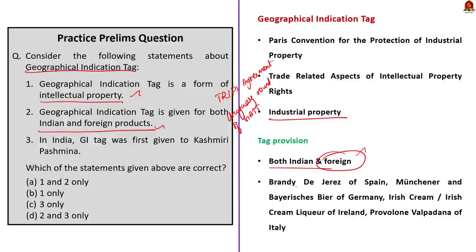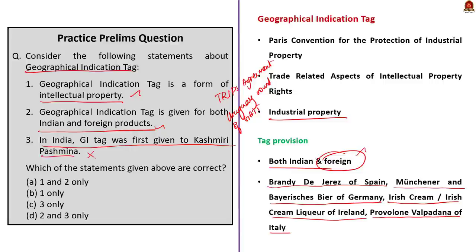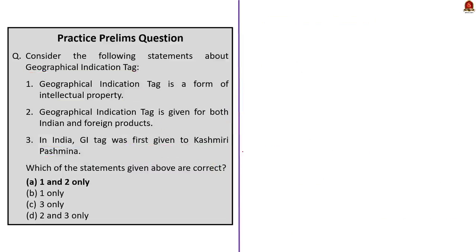Statement 3 — in India, the GI tag was first given to Kashmiri Pashmina — is incorrect. The first product to receive a GI tag in India was West Bengal's Darjeeling tea. The correct answer is Option A: 1 and 2 only.